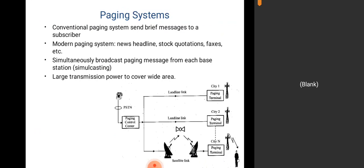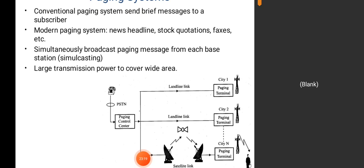Conventional paging systems send brief messages to a subscriber. Modern paging systems can send news headlines, stock quotes, faxes, and more. Paging messages are simultaneously broadcast from each base station — this is called simulcasting — using large transmission power to cover a wide area. The diagram shows a public switched telephone network with a paging control center, connected to paging terminals CT1, CT2, CT3, all landline-linked. These paging terminals receive information via satellite link.